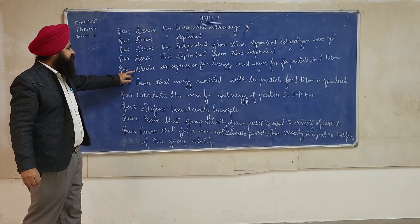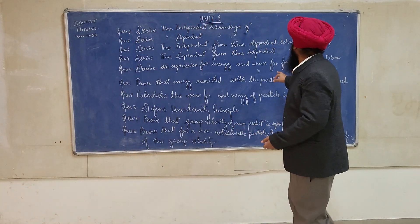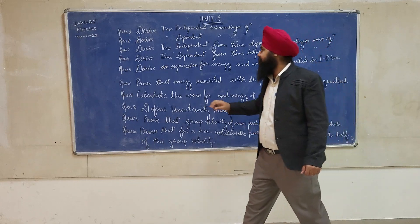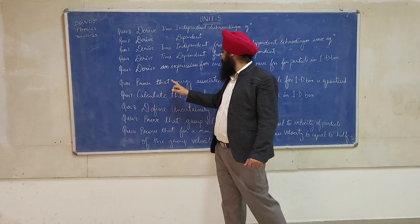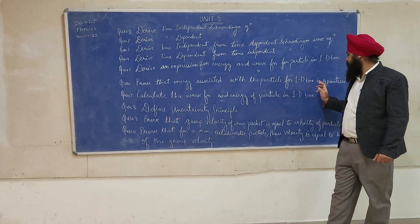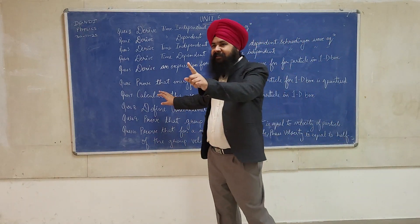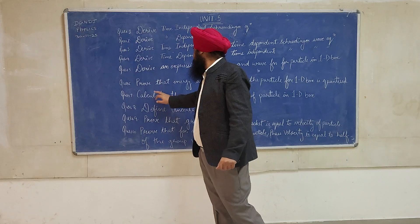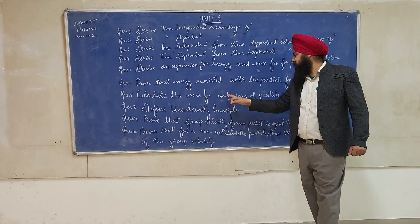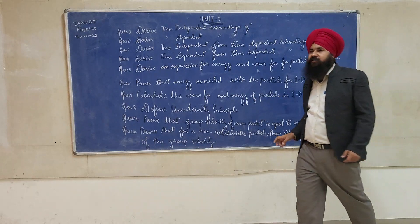The fifth question is: derive an expression for energy and wave function of a particle — a free particle in a one-dimensional box. The sixth question is: prove that the energy associated with a particle in a one-dimensional box is quantized. The seventh question is: calculate the wave function, or normalized wave function, and energy of a particle in a one-dimensional box.